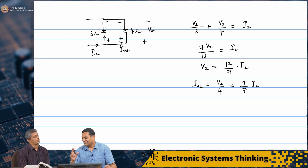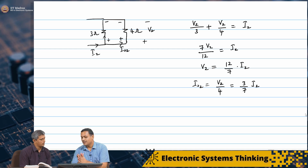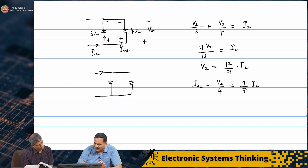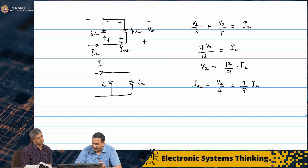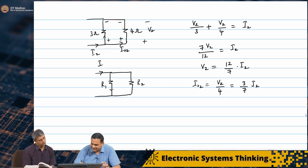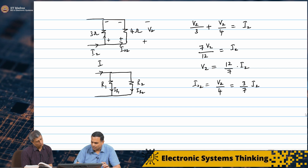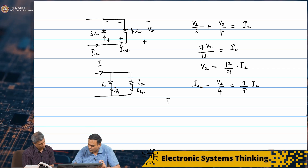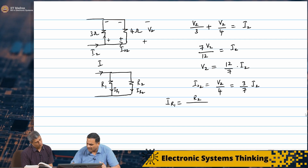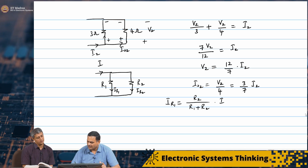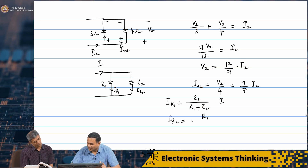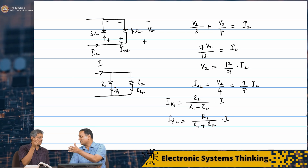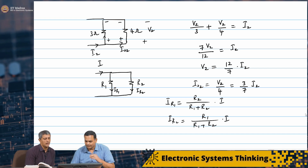This is a good time to reinforce the current divider rule. If you have two resistors R₁ and R₂ in parallel with total current I, then the current in R₁ is R₂/(R₁+R₂) × I, and the current in R₂ is R₁/(R₁+R₂) × I. Notice that the current in R₁ has R₂ in the numerator — the opposite resistor.